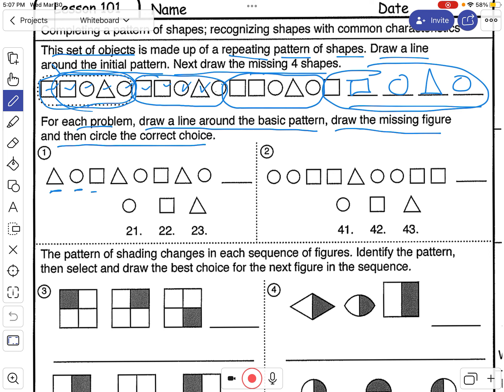So let's take a look here. We've got triangle, circle, square, triangle, circle, square. Oh, I'm starting to see a pattern. Okay, can you continue circling and then pick the right answer? Pause the video. Turn it back on when you're ready to see the solution.